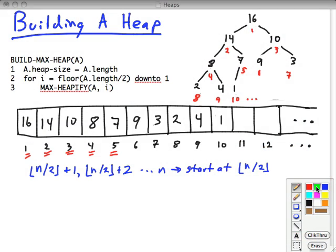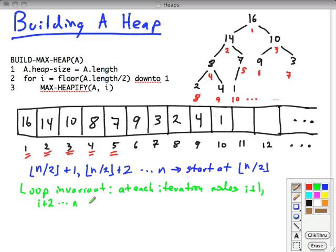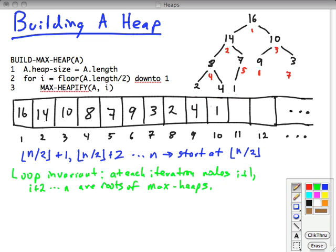So what about the correctness of this algorithm? We can use a loop invariant that at each iteration of the for loop, nodes i plus one, i plus two on up to n are roots of max heaps. To prove correctness by this loop invariant, we have to prove that it's true at initialization, that it's maintained, and it's true at termination, and that this leads to a useful property.